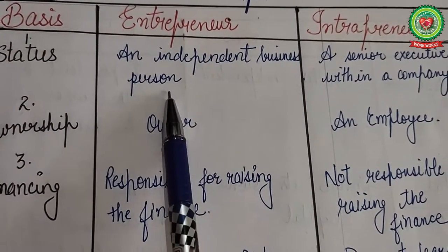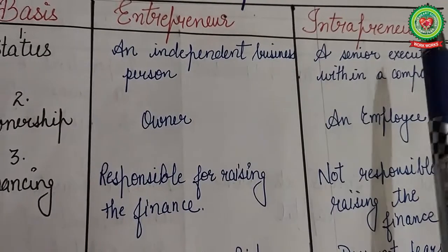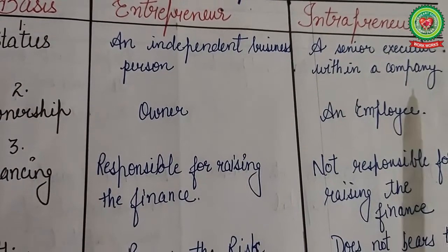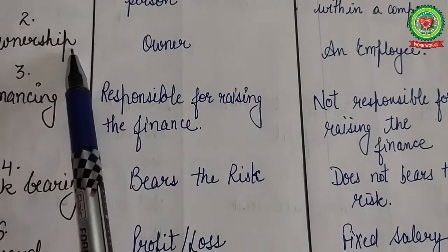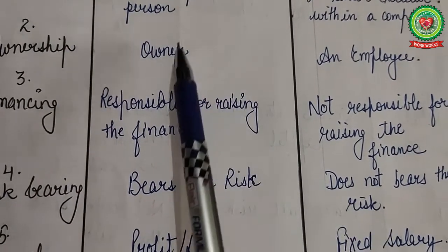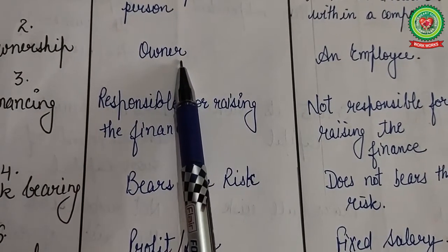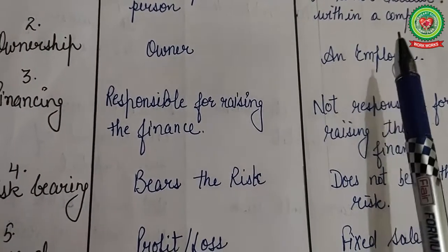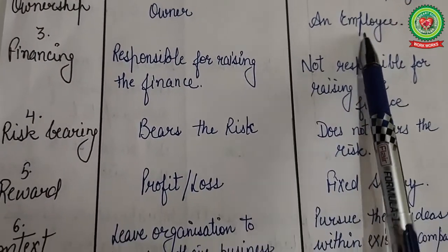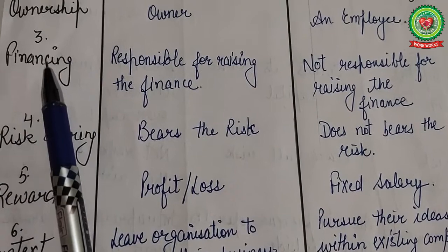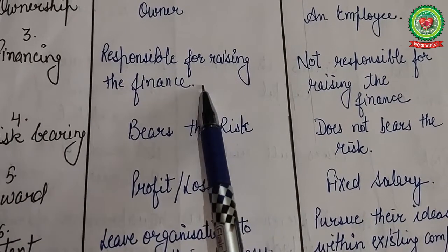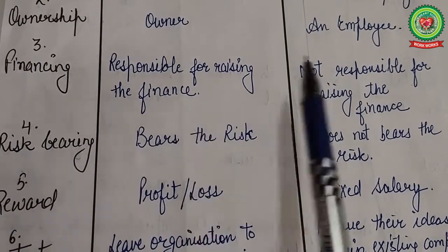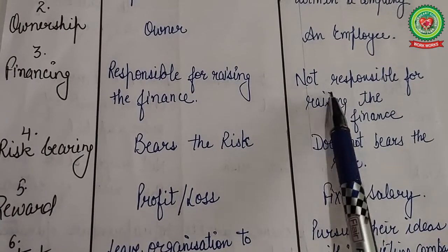Next is the difference between entrepreneur and intrapreneur. First, status — an entrepreneur is an independent business person, whereas an intrapreneur is a senior executive within a company. Second, ownership — an entrepreneur is the owner of the business, whereas an intrapreneur is an employee of the business. Third, financing — an entrepreneur is responsible for raising finance for the business, whereas an intrapreneur is not responsible for raising finance.